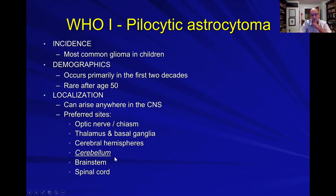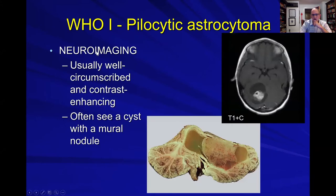In my adult population, by and far the most common place I see this tumor is in the cerebellum. In fact, I had a patient two weeks ago who had a recurrent pilocytic astrocytoma in his cerebellum. On imaging, these tumors are usually very well circumscribed and contrast enhancing. Here is an axial T1 with contrast MRI picture showing a cerebellar tumor — a very classic picture of this type of tumor where you have an enhancing nodule associated with a large cyst.